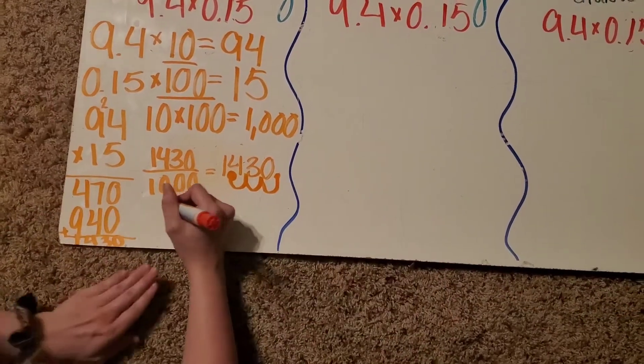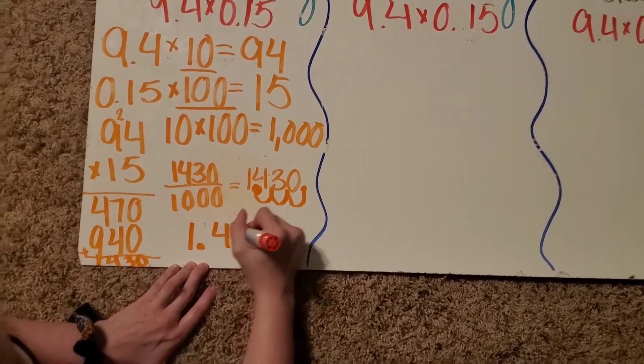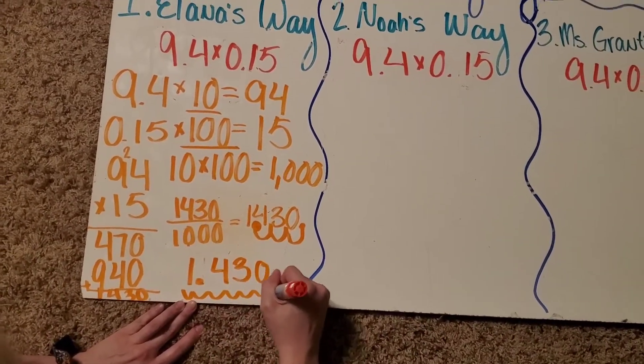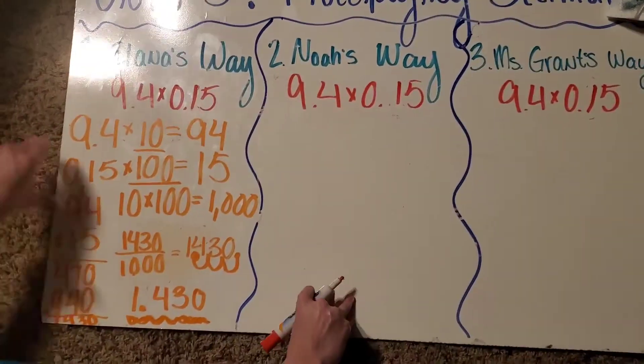Okay, so we have our answer, and that is 1.43. And remember, that zero is actually unnecessary, so you can keep it, or you can get rid of it. It does not matter.